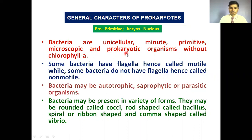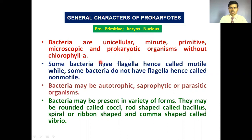Bacterial cells are prokaryotic organisms. If we split the word 'prokaryotic': 'pro' means primitive, 'karyon' means nucleus — meaning the nucleus is not well developed in the prokaryotic or bacterial cell. Some bacteria show the presence of flagella on their cell surface; these are called motile bacteria.